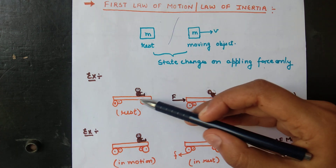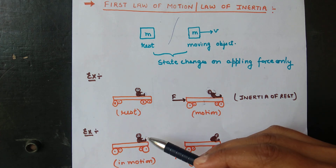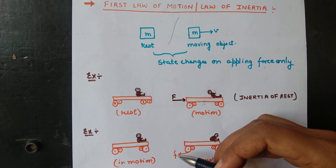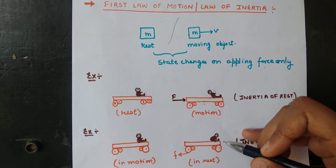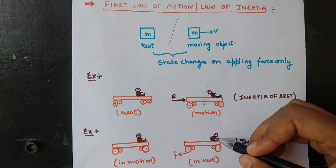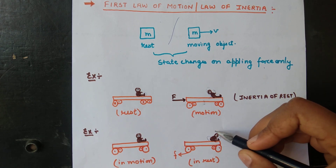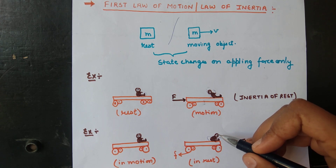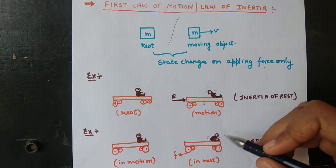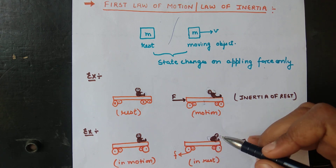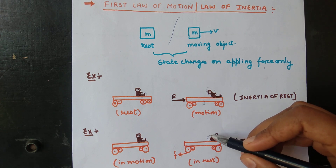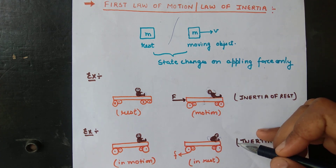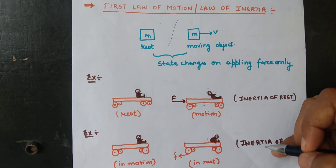Similarly, if a person is sitting in a moving vehicle and brakes are suddenly applied — meaning friction acts in the opposite direction — the body tilts forward. This happens because the lower part in contact with the vehicle comes to rest, but the upper part has the tendency to remain in motion, so it moves forward. This is why we wear seat belts in a bus or car — if brakes are applied, due to inertia of motion, the upper body could be thrown forward with enough force to go through the windshield.